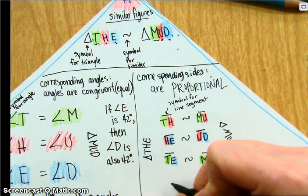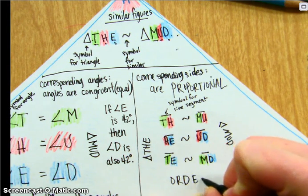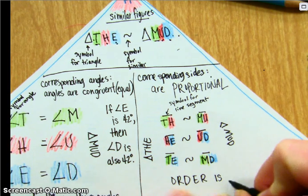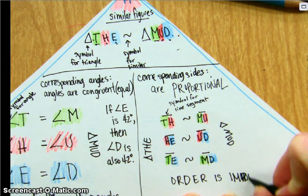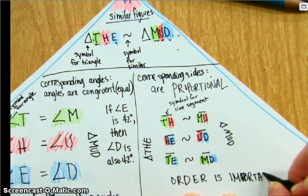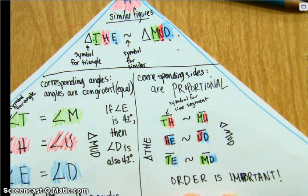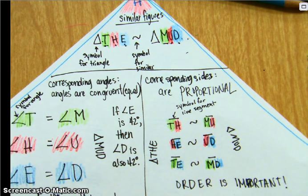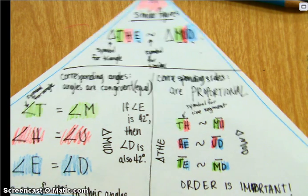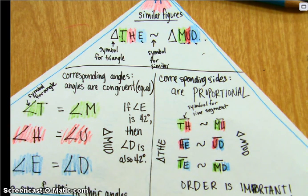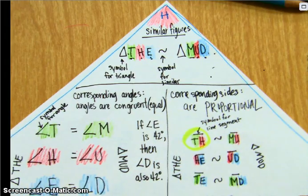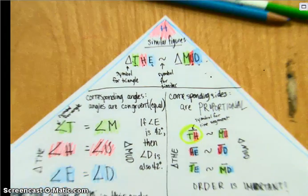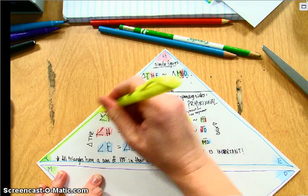So order is important. And I'm going to use highlighters to show these sides that are congruent, or excuse me, corresponding sides that are proportional. So if this were from T to H, here's from T to H. Corresponds with side MU.